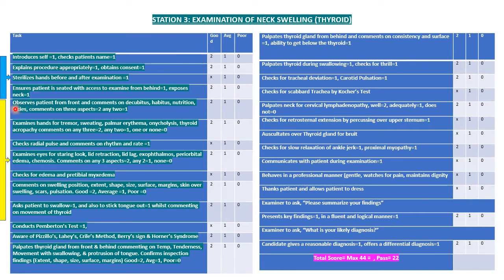Then proceed to inspection. Observe the patient from the front and comment on decubitus, habitus, and nutritional status. Examine the hands for tremors, sweating, palmar erythema, onycholysis, thyroid acropathy, and other signs. Next, check the radial pulse and comment on rhythm, rate, and volume.